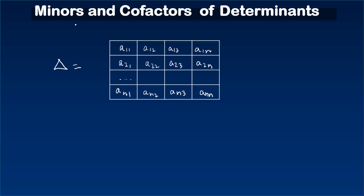Let's understand about the minors and cofactors of determinants. One thing to clarify: the determinants for which minors and cofactors are applicable have to have an order greater than or equal to two. If it is less than two, then minors are not applicable.